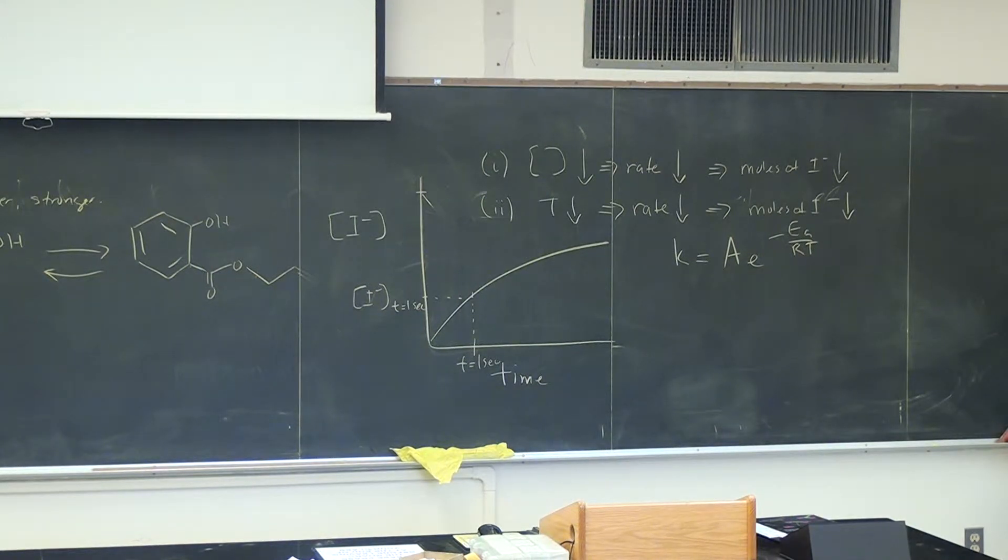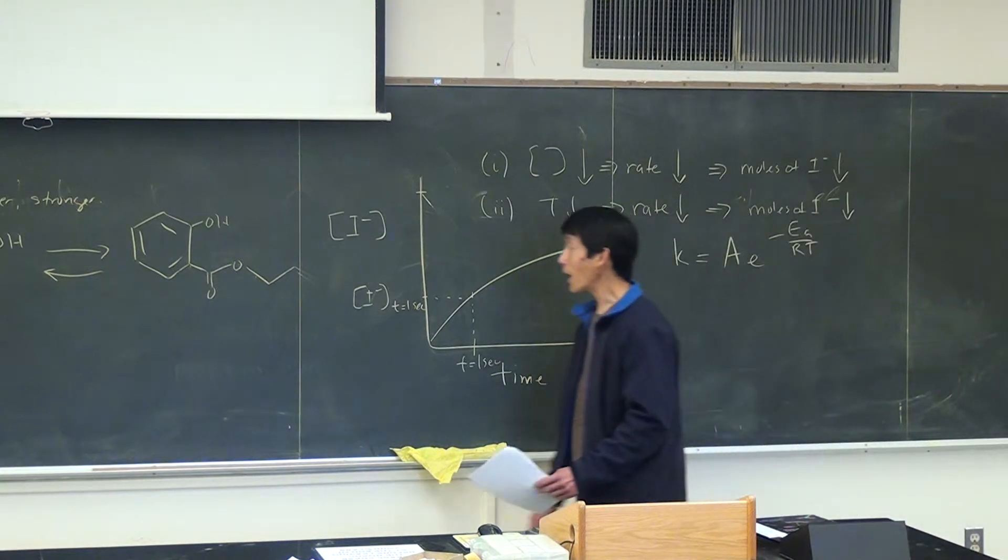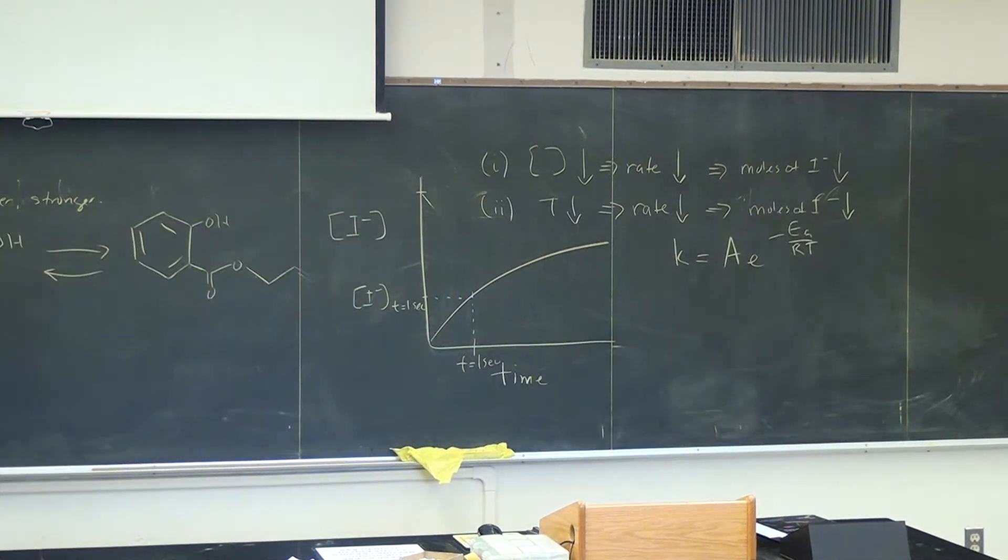Part C, you want the iodine clock reaction to turn blue in 45 seconds. Identify the reaction conditions which will make it turn blue in 45 seconds.